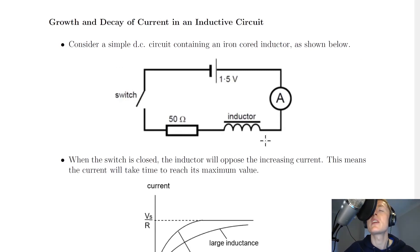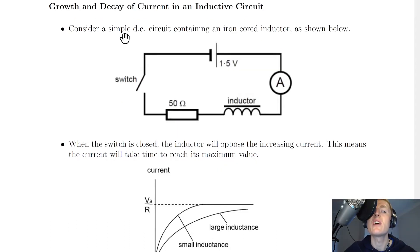Next we're going to look at the growth and decay of current in an inductive circuit, and this just means a circuit containing an inductor. So firstly it says to consider a simple DC circuit containing an iron core inductor, as shown below. So here we've got a switch, a 50 ohm resistor, an iron core inductor, an ammeter, and a battery of 1.5 volts in series.